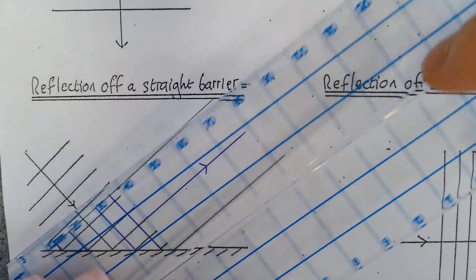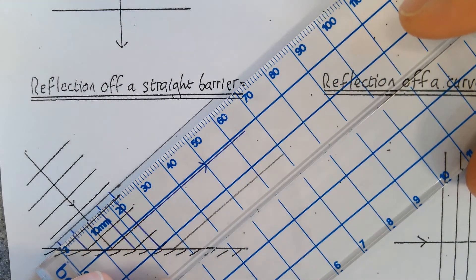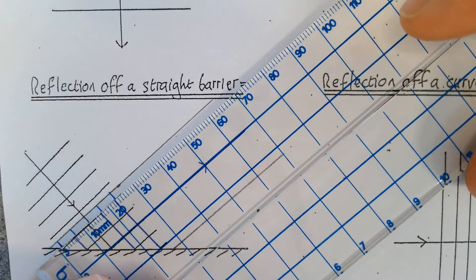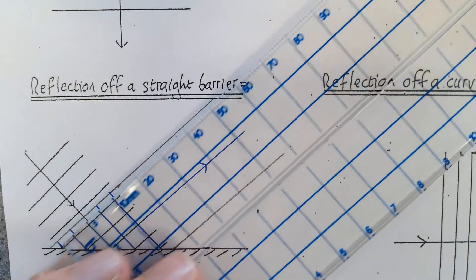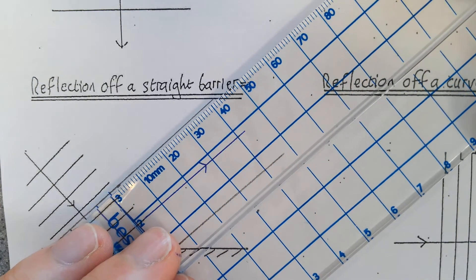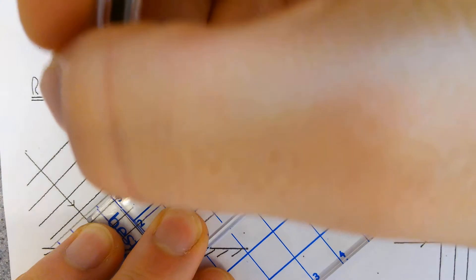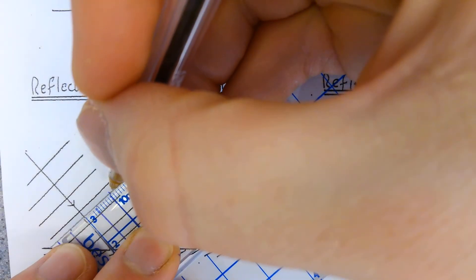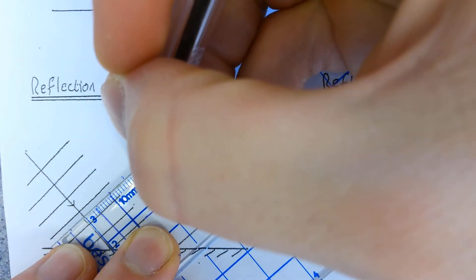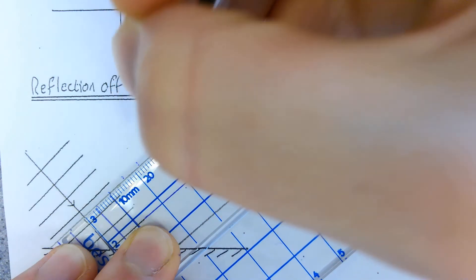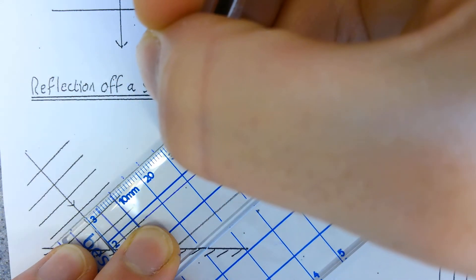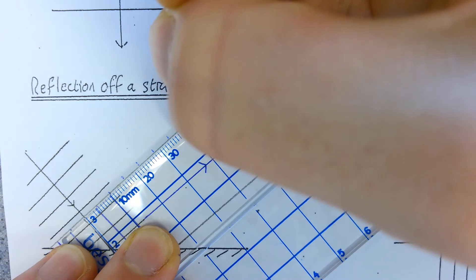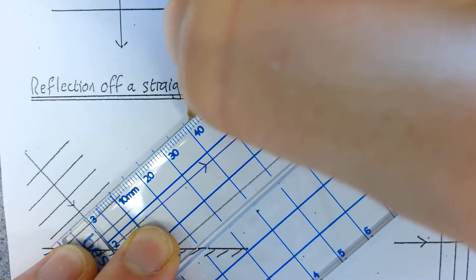So what I'm going to do is measure this, and it's about six millimeters per wave. So I'm just going to measure: three, four, five, six, one, two, three, four, five, six... marking out the intervals consistently.